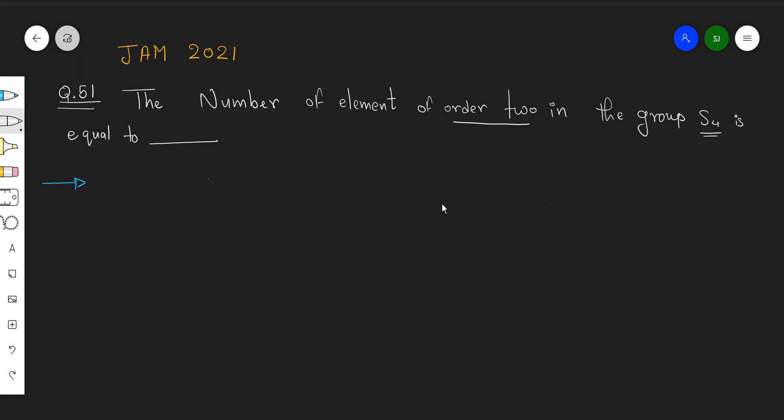We know that order of an element of a cycle is the same as length of a cycle, and of product of disjoint cycles is nothing but LCM of the cycles. That means the element of order 2 will look like either AB or it would look like ABCD. There is no other option.